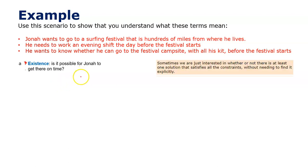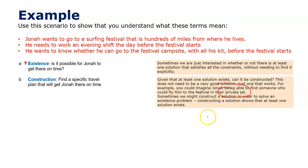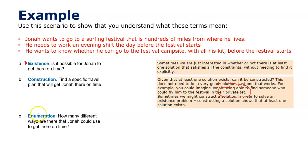Sometimes we're just interested in whether there's at least one way of getting there. If you find one solution, you've proved it exists. Construction would ask: could we find a specific way of getting there? He might drive, take a train followed by a bus followed by a taxi — as long as there's a route and timeline that gets him there on time. Even a private jet, if he has rich friends, would count as a construction solution.